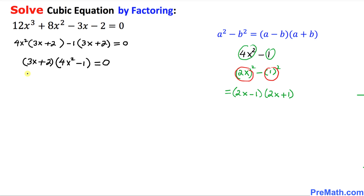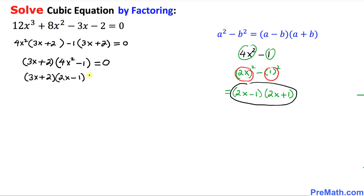So going back to the left hand side, 3x plus 2 is the first factor, and 4x squared minus 1 has been factored as 2x minus 1 times 2x plus 1, which is equal to 0.